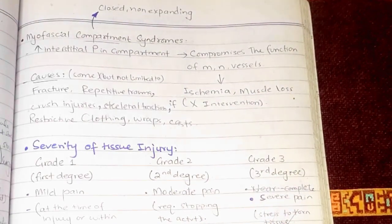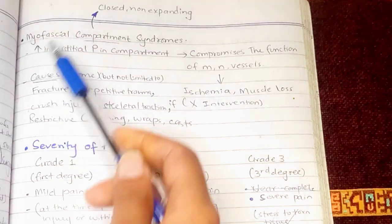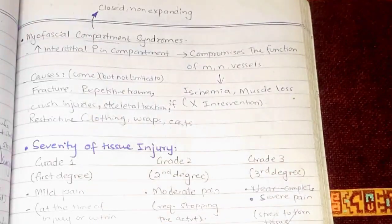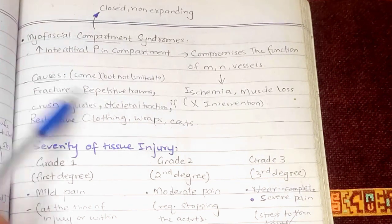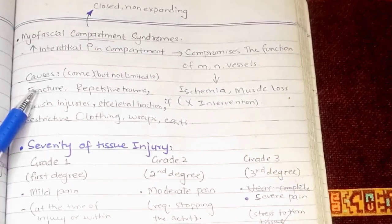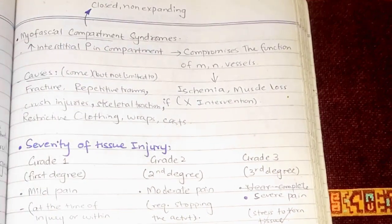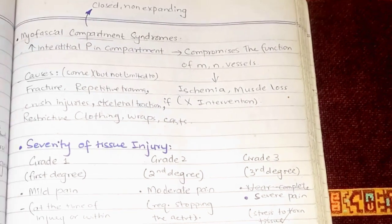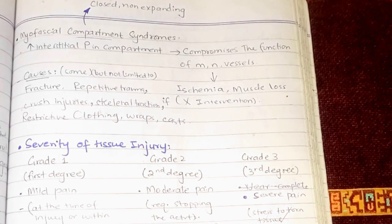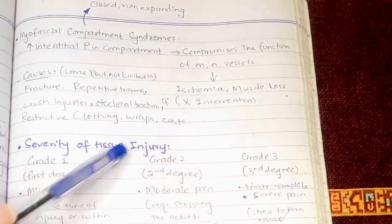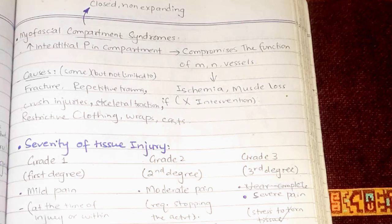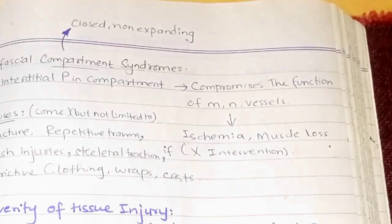The causes of myofascial compartment syndrome are not limited to the following, but some include fracture, repetitive trauma, crush injuries, skeletal traction, restrictive clothing — for example, a tightly wound cloth around a joint or limb — as well as wraps and casts, which also cause compression of the limbs and can result in myofascial compartment syndrome.